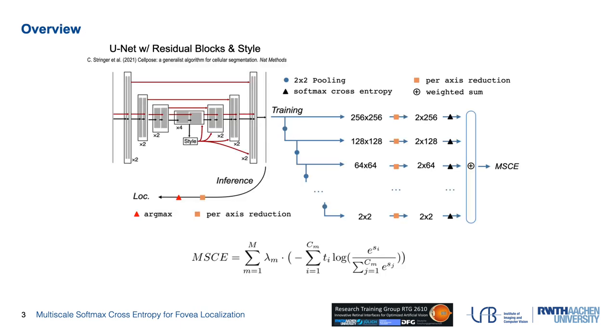Here is an overview of the backbone network and the loss construction. We use a modified U-Net architecture with residual blocks, and the additive MSCE loss is calculated based on multiple pooled features.